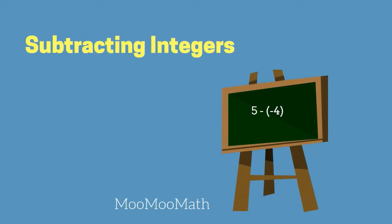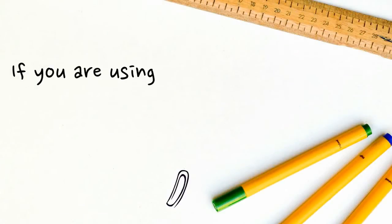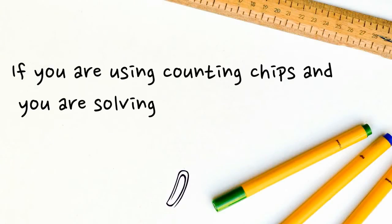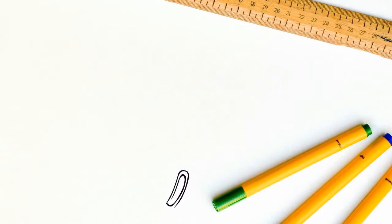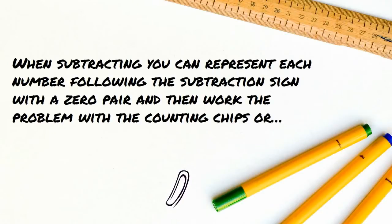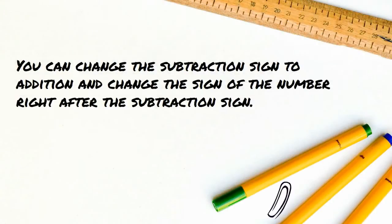Welcome to MooMooMath and Subtracting Integers. If you are using counting chips and you are solving subtraction problems, you have two options. Option one is when subtracting, you can represent each number following the subtraction sign with a zero pair and then work the problem with the counting chips. Or you can change the subtraction sign to addition and change the sign of the number right after the subtraction sign.